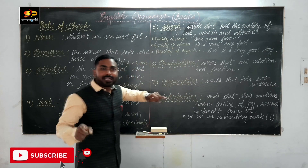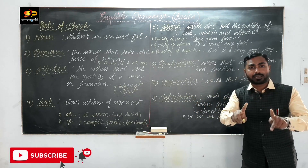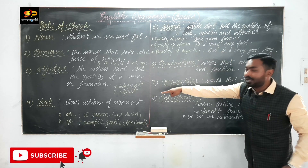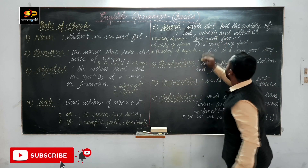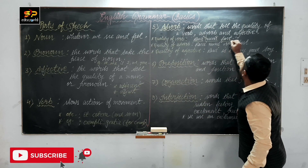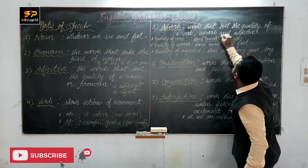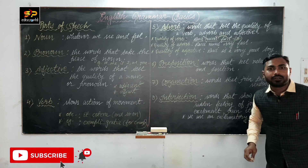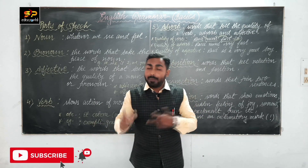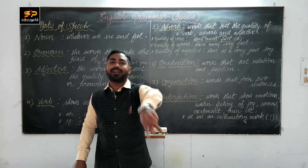For example: 'Ravi runs fast.' Ravi is a noun, runs is a verb — and 'fast' tells the quality of the verb 'run.' So fast is an adverb. 'The old man is walking slowly' — walking is the verb, and 'slowly' tells the quality of walking. So slowly is an adverb telling the quality of a verb.